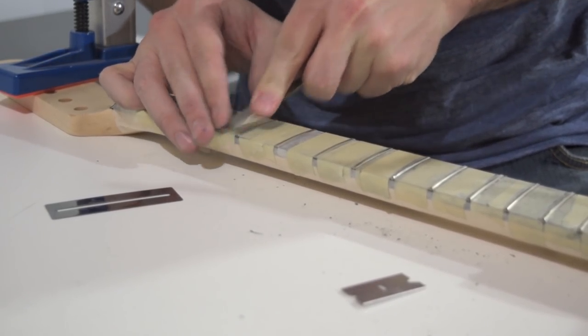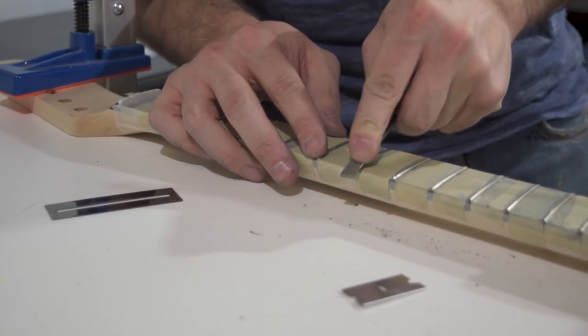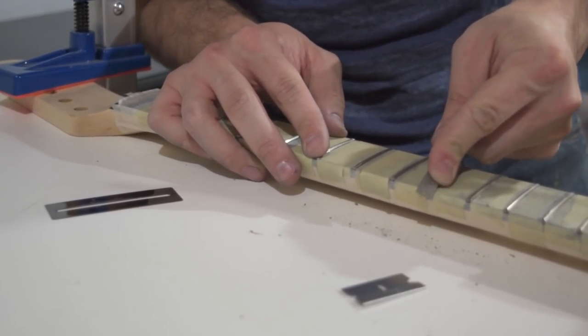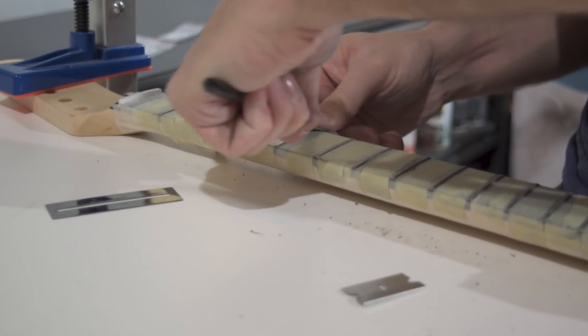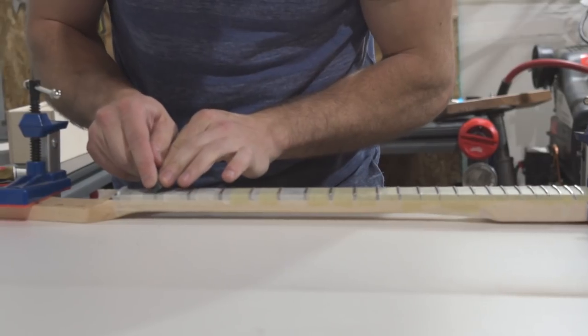Here I am taking the edges off. I'm basically just rounding over the edges of the frets so that it's nice and comfortable to play. I don't cut myself. My hand moves along smoothly and you see you get faster as you go if you want to, if you get more used to the motion. It doesn't take all that long.